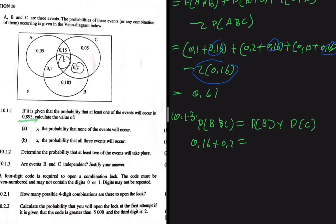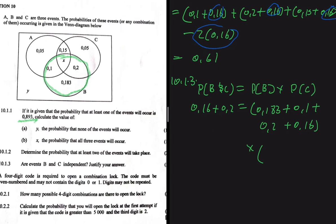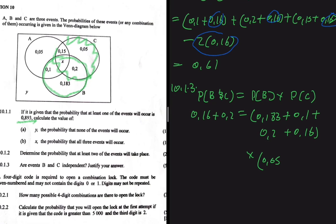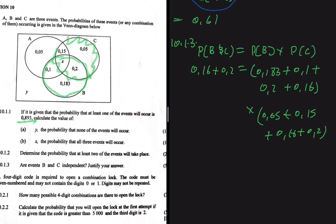The probability of B includes everything in circle B: 0.183 plus 0.1 plus 0.2 plus 0.16. The probability of C includes everything in circle C: 0.05 plus 0.15 plus 0.16 plus 0.2. Multiplying P(B) by P(C) gives approximately 0.3608, which is approximately equal to 0.36. Since P(B∩C) ≈ P(B)·P(C), we conclude that events B and C are independent of each other.